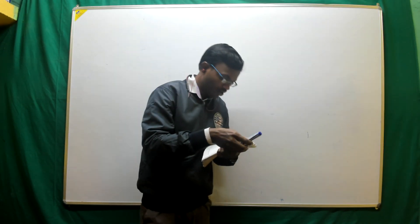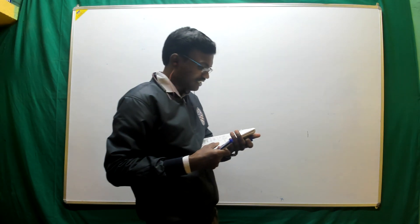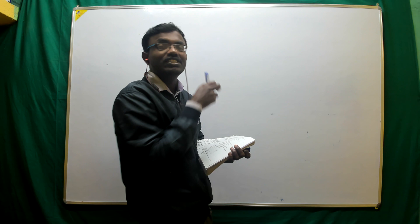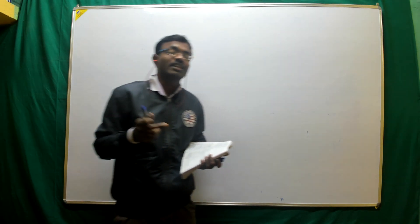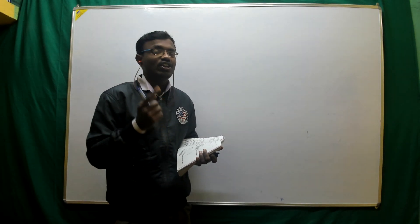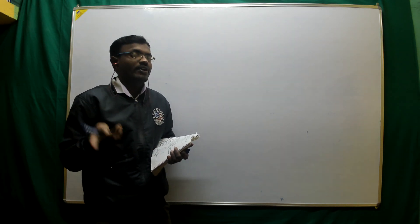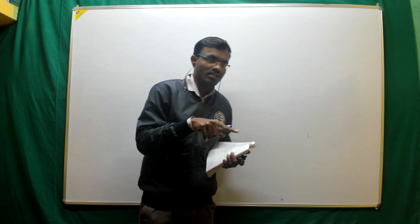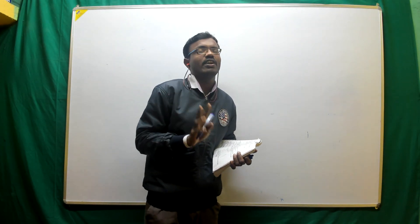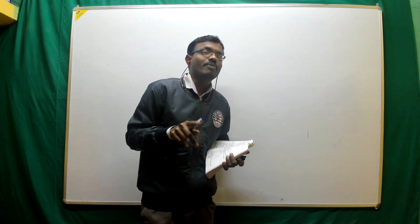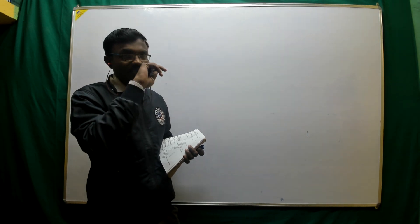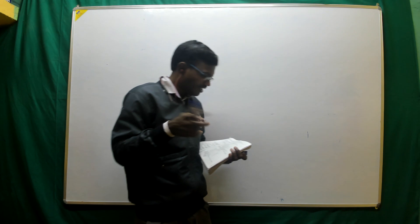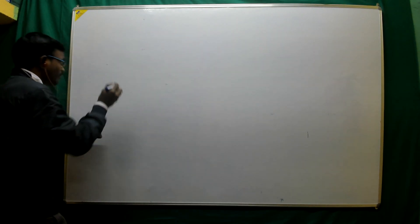Examine the consistency of the following equation and if consistent find the complete solution. The number of solutions that exist are: unique solution, infinite solutions, and no solution. Whenever a system is consistent, it has either a unique solution or an infinite number of solutions. Whenever a system has no solution, it is called inconsistent.